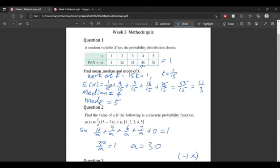To get the mean, we just use the expected value formula: one times one over 15 plus two times two over 15, et cetera, all the way to the end, and we should get 11 over three for our mean.